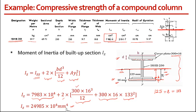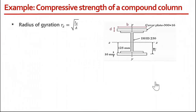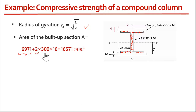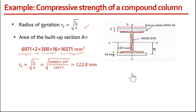Now knowing IZ, I can calculate the area of the built-up section. The area of ISHB 250 from SP6 is 6971 mm², and we add two cover plates of 300 × 16 mm each. With the total area known, the radius of gyration along the Z axis is the square root of moment of inertia divided by area, giving approximately 122–123 mm.